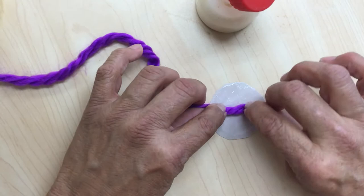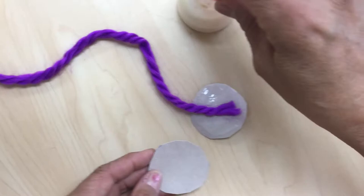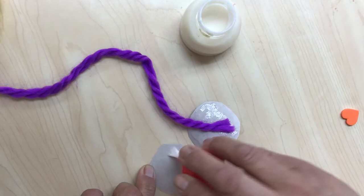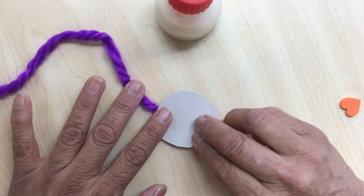And put the yarn in the middle. And then you can get the other circle and put just a little bit. Wipe down the glue because you don't need a whole lot of glue. And brush it onto the circle.